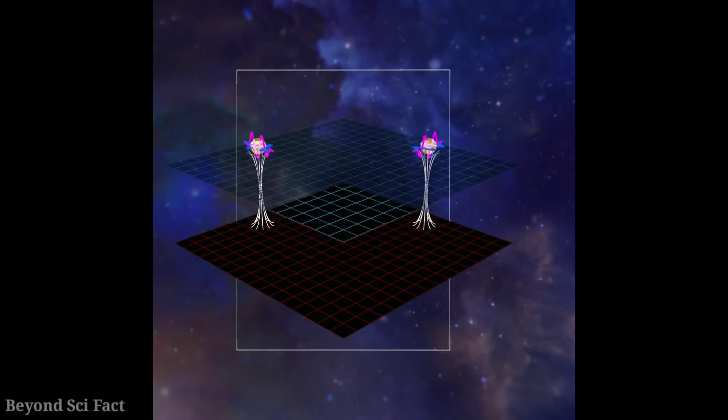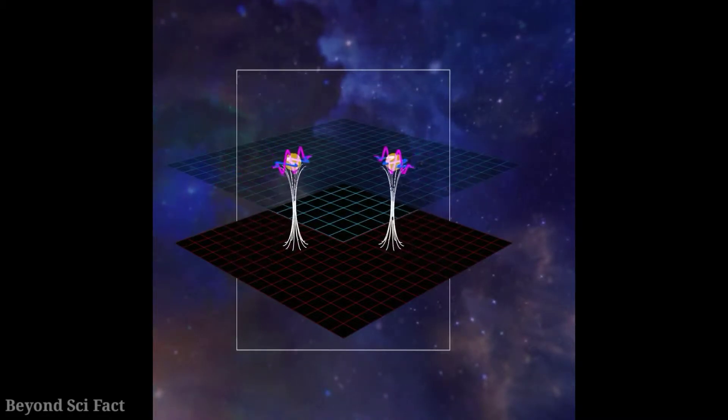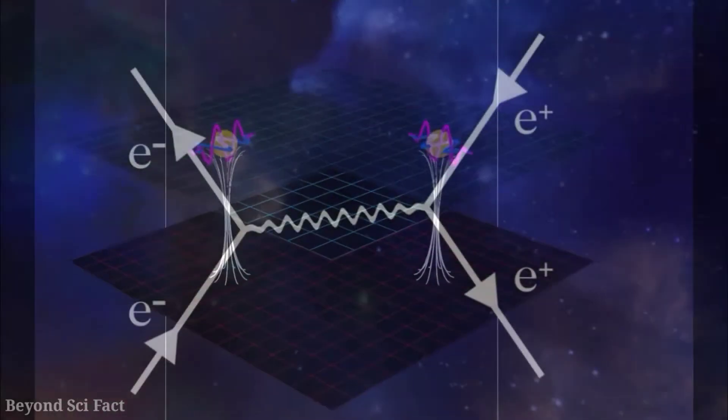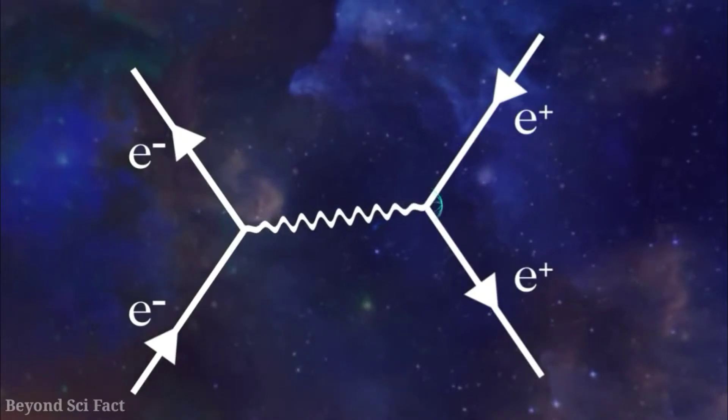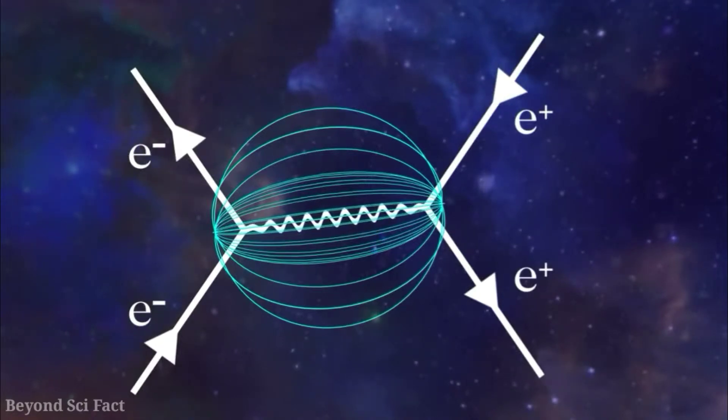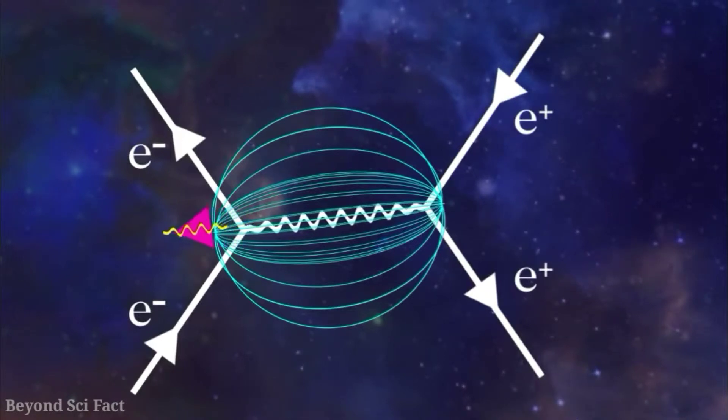In the first example, we saw that electrons were repelling each other by transferring virtual photons between them. But what would happen if there were attractive forces between them? Meaning if there is an electron and the other positron, then how can it come closer to each other by transferring virtual photons between them? Let's understand it from a diagram in which the electron is sending one single photon into positron.